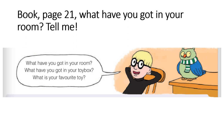Book page 21. What have you got in your room? I've got a computer in my room. A desk. A chair. What have you got in your room? Reci mi što imaš u sobi na engleskom. What is your favorite toy? Koja je ti najdraža igračka? My favorite toy is a ball. What's your favorite toy?